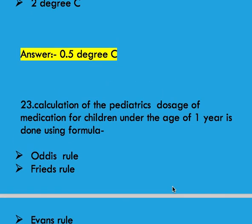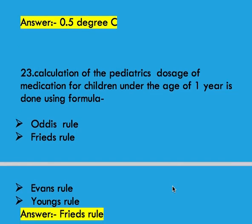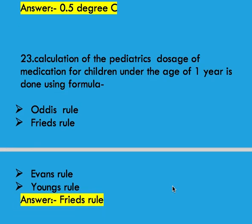Calculation of the pediatric doses of medication for children under the age of 1 year is done using the formula. Options: Odie's rule, Fried's rule, Evans' rule, and Young's rule. Right answer is Fried's rule.